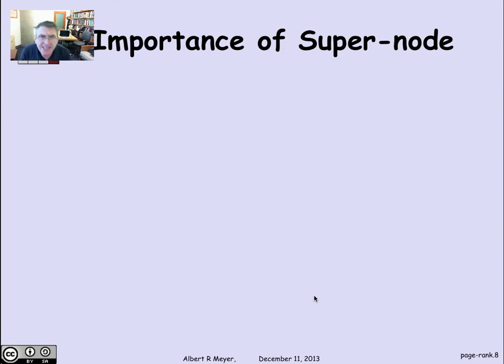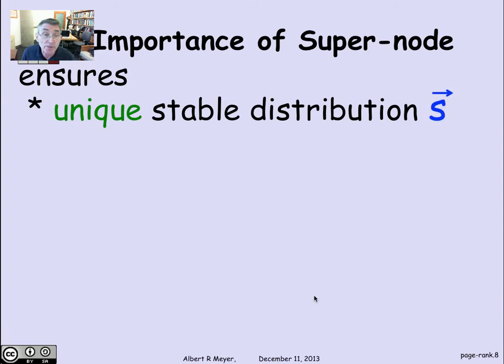The super node is playing a technical role in making sure that the stationary distribution exists. It guarantees that there's a unique stationary distribution. S bar, by the way, I sometimes use the word stable and sometimes stationary. They're kind of synonyms, although I think officially we should stick to the word stationary distribution. When a digraph is strongly connected, that is a sufficient condition for there to be a unique stable distribution. That's actually proved in one of the exercises in the text.